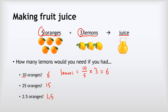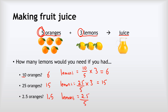What about the second one? Lemons equals 25 divided by 5 — because there are five oranges in the recipe — giving five lots of the recipe. Multiply by the three lemons in the recipe: 25 divided by 5 is 5, multiplied by 3 gives 15 lemons. For the last one: 2.5 divided by 5 tells us we've got enough oranges to make half the recipe, and multiplying by 3 gives us 1.5 lemons.